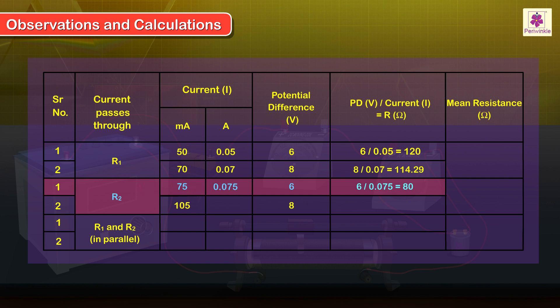For potential difference 8 volts, a current of 105 mA, that is 0.105 A, flows through the circuit. Calculate the value of R2 by applying Ohm's law. For the second set of readings, R2 is equal to 8 upon 0.105, which is equal to 76.19 ohms.